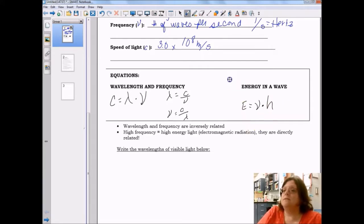Planck's constant is represented by the letter H, and it is 6.63 times 10 to the negative 34 joule seconds.